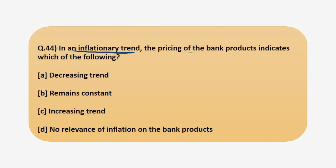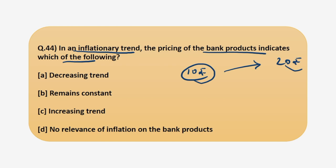In an inflationary trend, the pricing of bank products indicates which of the following? As an individual, if you see that inflation is rising in the coming period, you will obviously prefer to consume today rather than keeping your money in the banks. You will buy a Rs. 10 worth good now to avoid purchasing the same good for Rs. 20 in the future — these are arbitrary numbers just to illustrate the example.